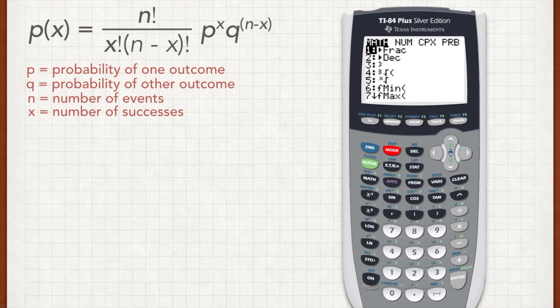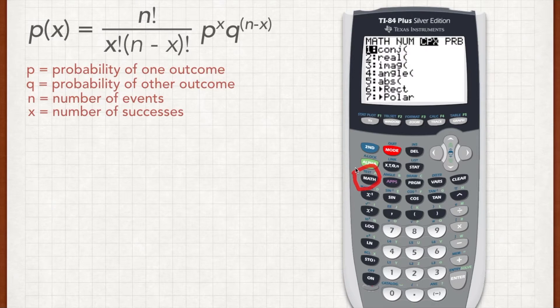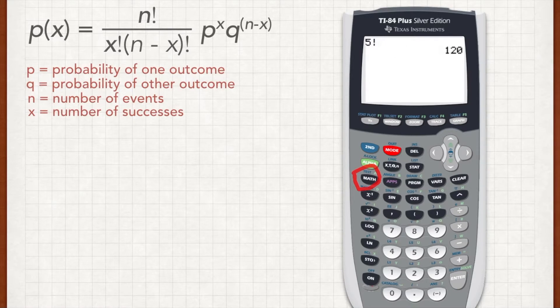The easier way to deal with factorials is to calculate them on a calculator, which you can do by pressing the math button right here, and then using the right arrow to go over to probability, and then down to the exclamation point, number 4. So for instance, if I type 5 exclamation point factorial, it'll give me the answer 120, just as before.